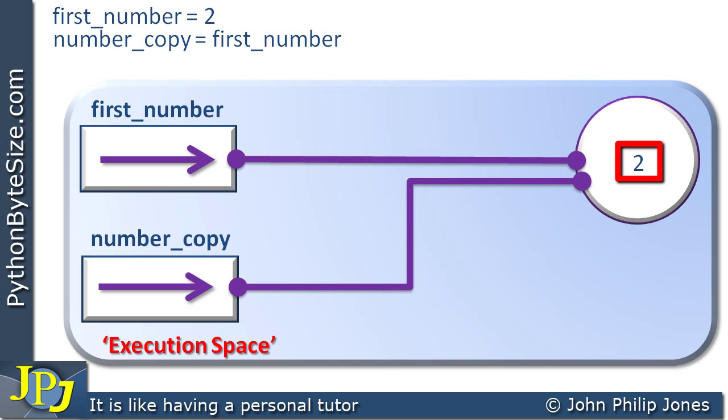Now the next program statement is saying first_number is assigned 7. We have to be clear as to what will happen here. Remember we're dealing with a model of what's happening. We're high level language programmers. What goes down at the machine code level we could talk about, but as high level language programmers we need a model to understand what's happening, and that's what I'm trying to introduce with this notion of execution space.